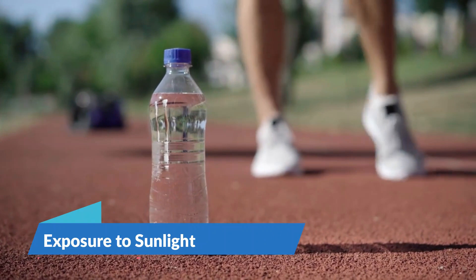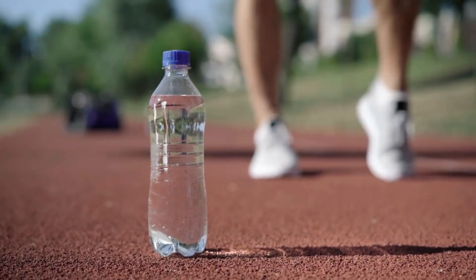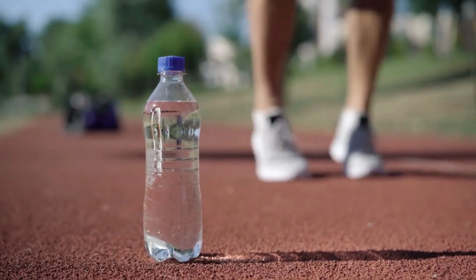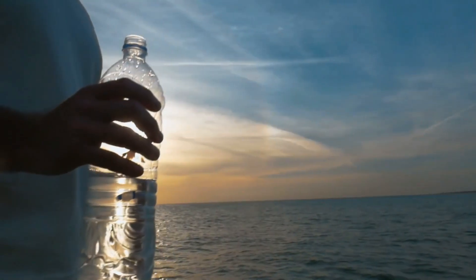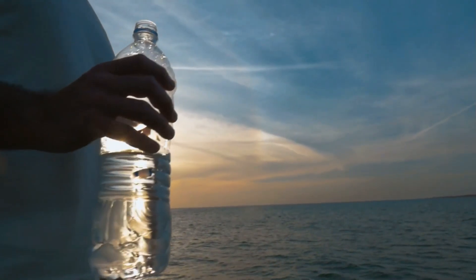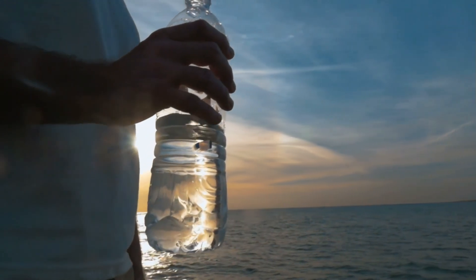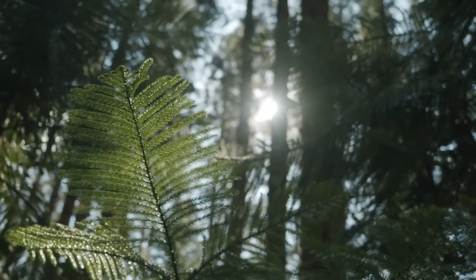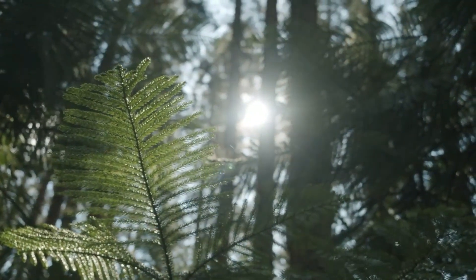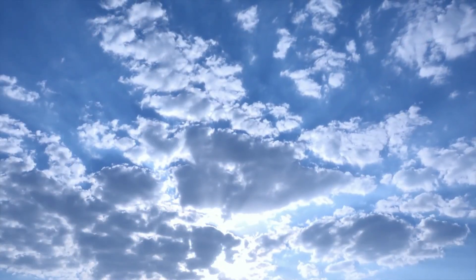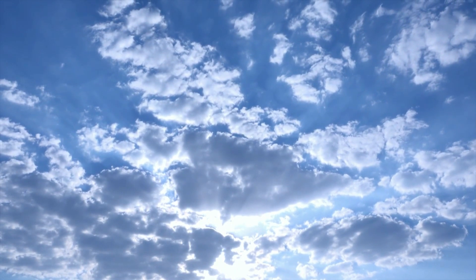Step 3: Exposure to sunlight. Place the water-filled bottles on a roof or a rack, preferably on a reflective surface to enhance UV exposure. Ensure that the bottles are exposed to sunlight for at least 6 hours if the sky is sunny, or up to 2 consecutive days if it's partially cloudy. The effectiveness of SODIS is heavily dependent on weather conditions. It's less effective on cloudy days or in areas with frequent interruptions of sunlight.